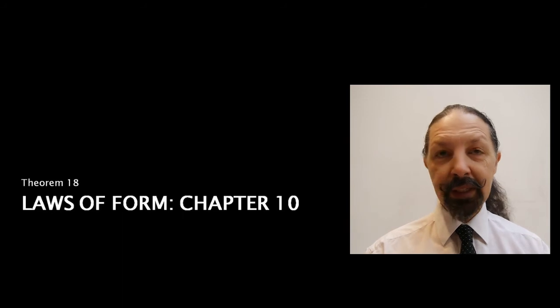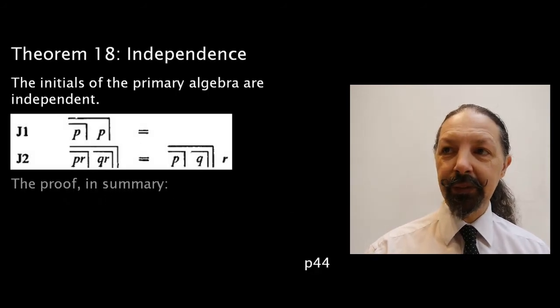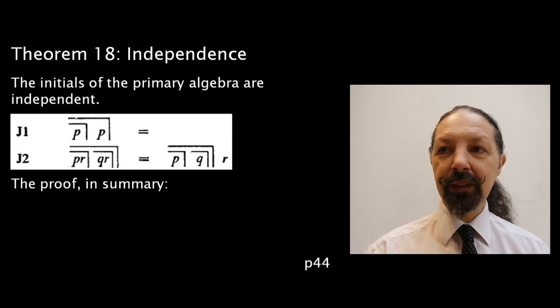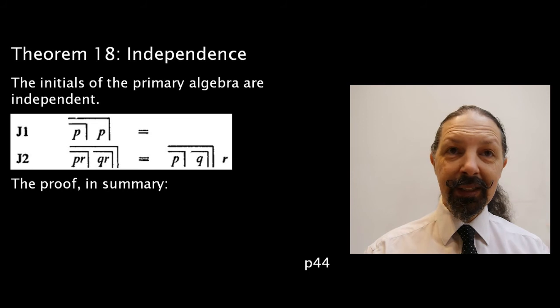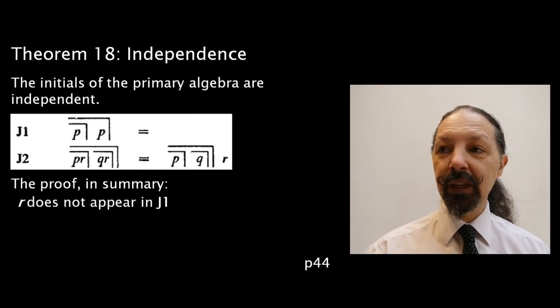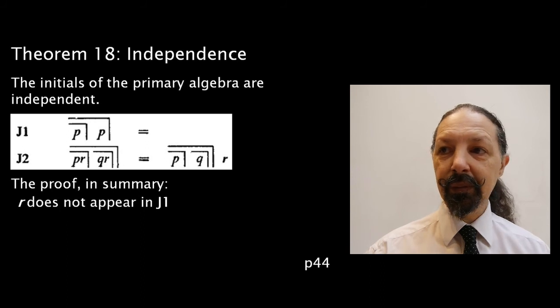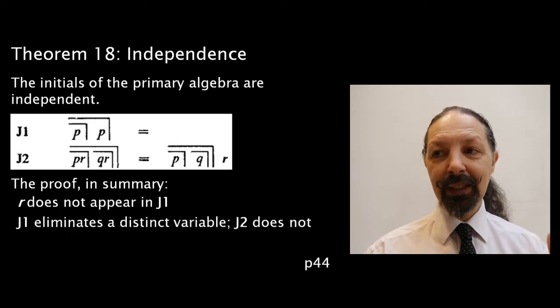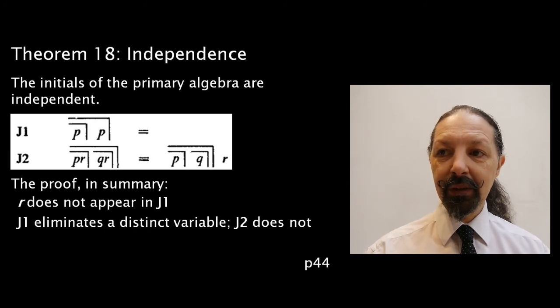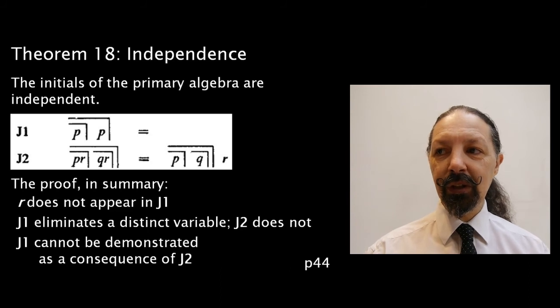And that takes us into the next chapter, which is about independence. He says J1 and J2 are completely independent. In summary, the proof is that you don't have an R term in J1, so they've got to be different. J1 eliminates a distinct variable J2 doesn't. J1 cannot be demonstrated as a consequence of J2.